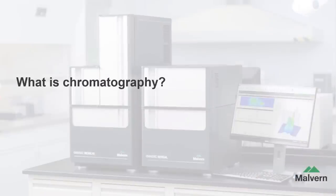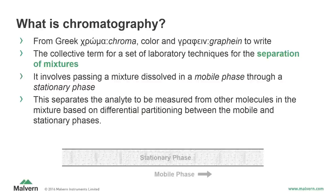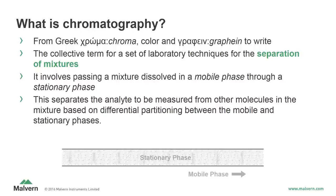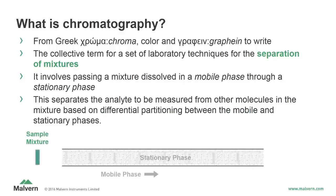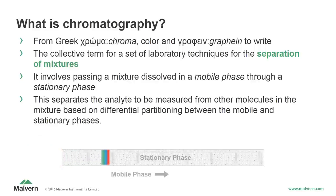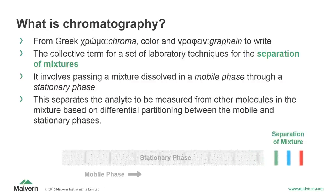So what is chromatography? The C in both GPC and SEC stands for chromatography, which refers to a set of laboratory techniques involving the separation of mixtures. Chromatography involves passing a mixture carried by a mobile phase through a stationary phase, which separates the constituents of the mixture based on differential partitioning between the mobile and stationary phases. The mobile phase is shown passing through the stationary phase, which is usually located in a column.